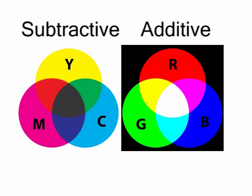Subtractive color mixing systems traditionally use red, yellow, and blue as the primary colors, mixing these three colors to create other colors. Additive color mixing systems traditionally use red, green, and blue as the primary colors, using combinations of lights in these three colors to create other colors.